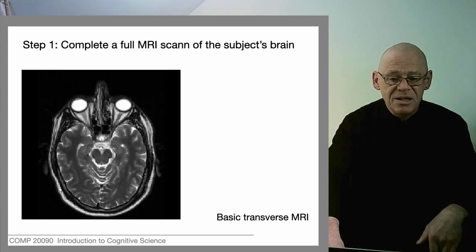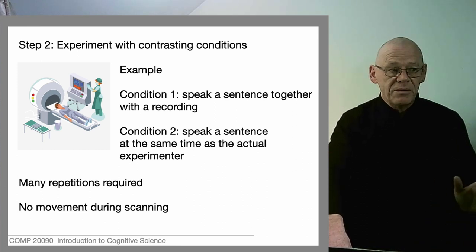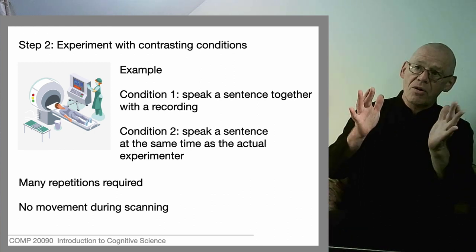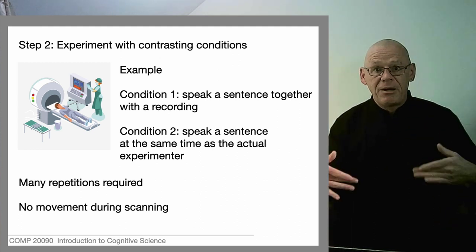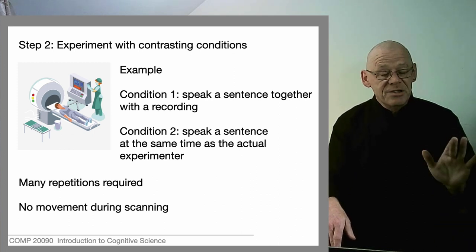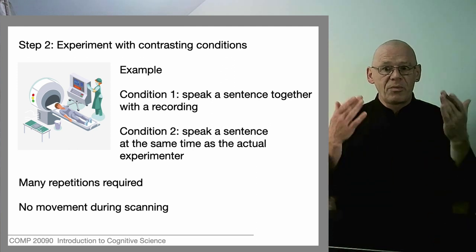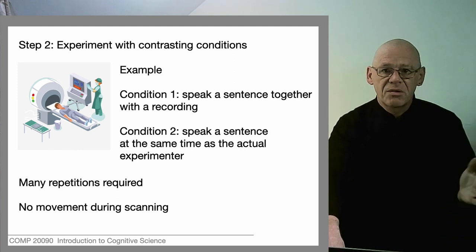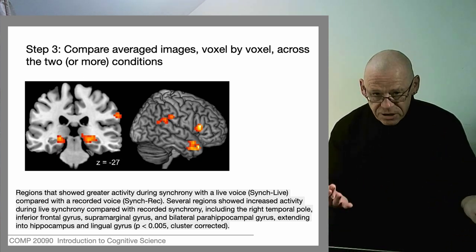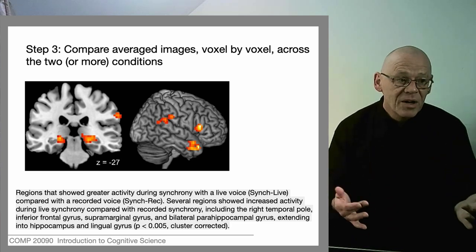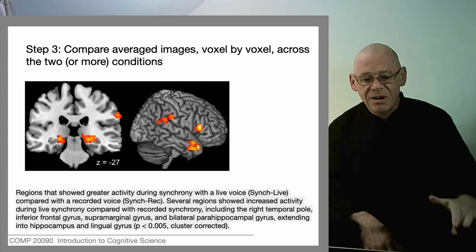Then you do a whole lot of scans — much lower resolution, taking about five seconds each. If we have two conditions, you do half the scans in one case and half in the other, then subtract one from the other to see where blood flow changes. For example, subjects in the scanner spoke a sentence together with a recording, or spoke a sentence with an experimenter in live interaction. Because of the very slow blood flow response, you can speak and scan afterwards, then subtract condition one from condition two to find changes in regional blood flow. The resolution is rather poor compared with the MRI image.